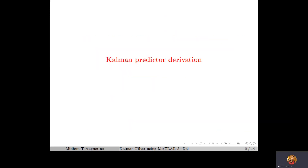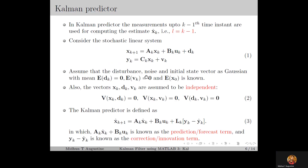Next, we move on to the basic idea and derivation of the Kalman predictor. In the Kalman predictor, the state estimate xk hat at time instant k is computed using the measurements up to time instant k−1, so l is equal to k−1. We consider the stochastic linear system defined by equation 1 — a stochastic linear time-varying system where the system matrix Ak, input matrix Bk, and output matrix Ck are time-varying but assumed to be known. In the case of a linear time-invariant system, Ak equals A, Bk equals B, and Ck equals C, which are fixed matrices.